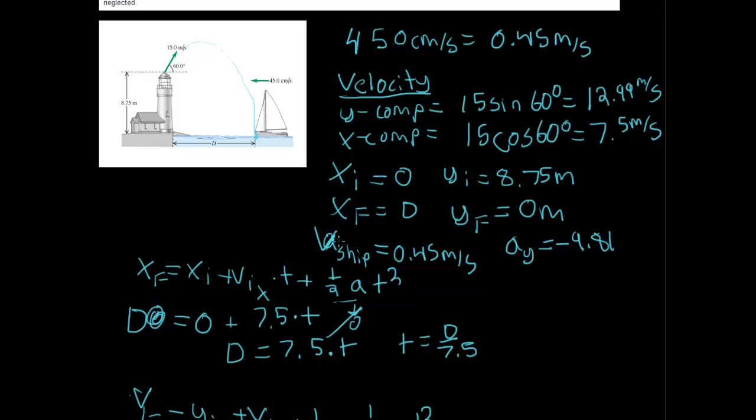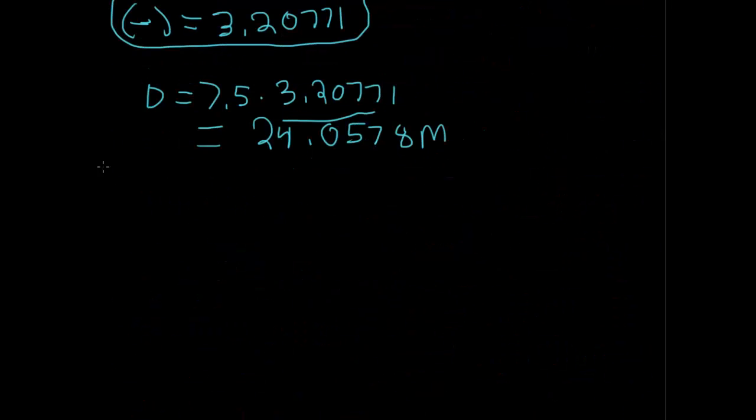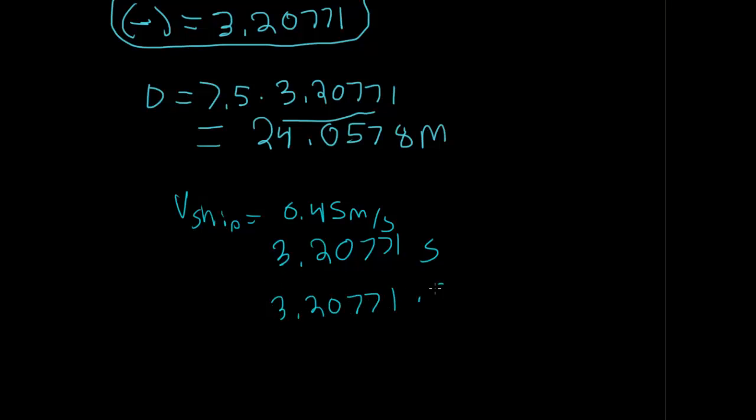So the ship has a velocity of 0.45 meters per second. The velocity of the ship will be 0.45 meters per second, and we know that the projectile will be up in the air for 3.20771 seconds, so we'll multiply these values to see how far the ship will need to be to reach that point of distance D, which these two multiplied is 1.44, and now what we have is we have our total distance here.